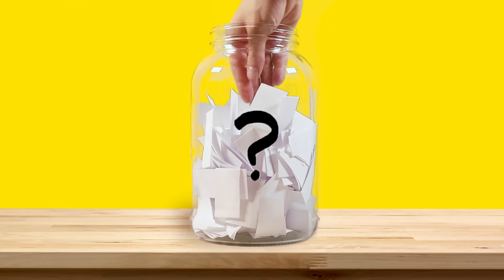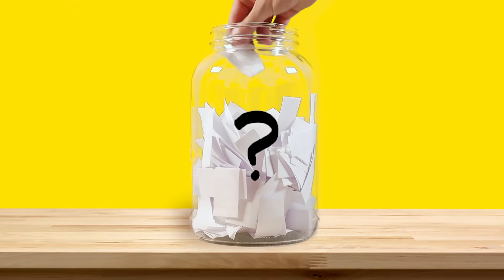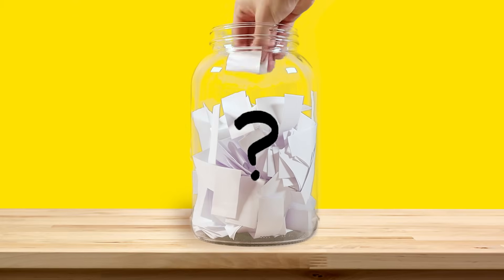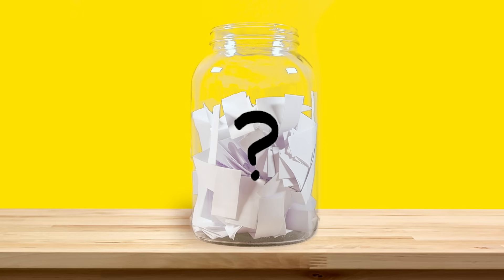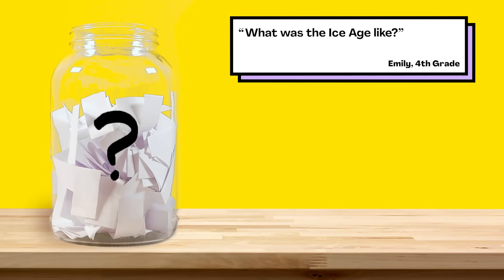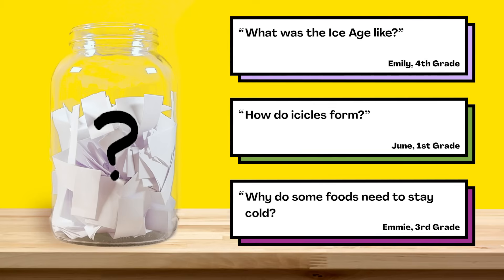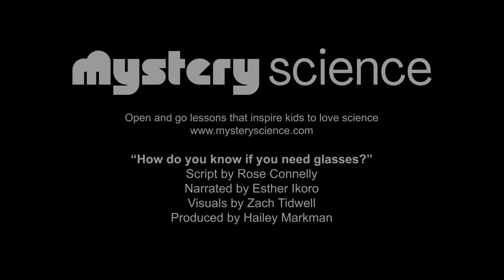Now for the next episode, we reached into our question jar and picked out three questions we're thinking about answering next. When this video's done playing, you'll get to vote on one. You can choose from: what was the ice age, how do icicles form, or why do some foods need to stay cold? Submit your vote when the video's over — we want to hear from all of you watching. There are mysteries all around us. Stay curious, and see you next week.